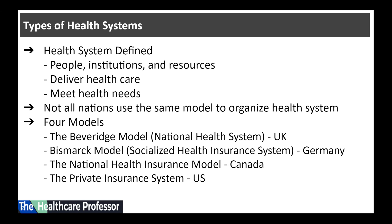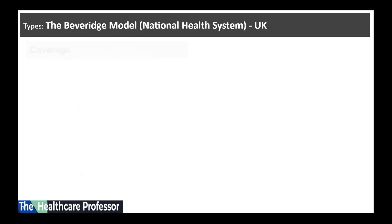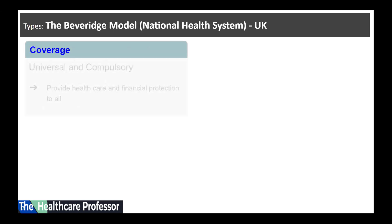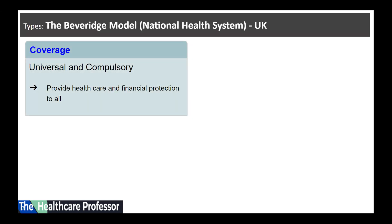The third model is the national health insurance model, used in Canada. And the fourth, used to some extent in the United States, is the private insurance system. Let's discuss each of these models.